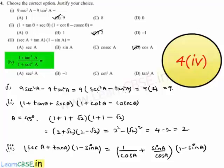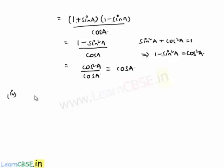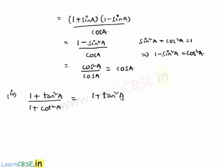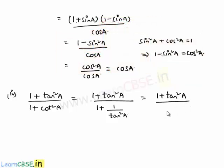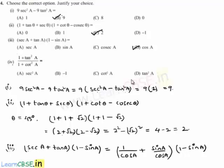Finally, moving on to the fourth bit. The given expression is (1 + tan² a)/(1 + cot² a). Since cot² a = 1/tan² a, the denominator 1 + cot² a can be written as (1 + 1/tan² a) = (tan² a + 1)/tan² a. Dividing, (1 + tan² a) divided by (1 + tan² a)/tan² a, the (1 + tan² a) cancels, leaving tan² a. So our answer is option b.